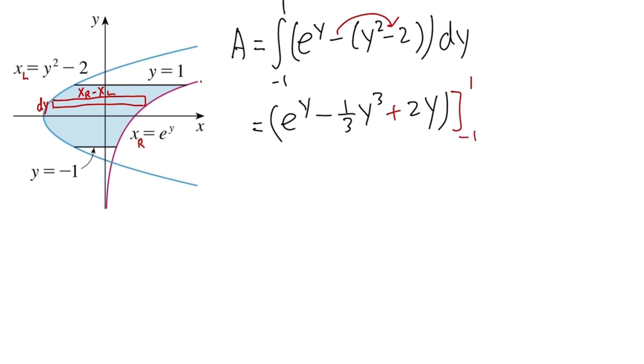So plugging 1 first, we get e to the 1st minus 1 third, 1 to the 3rd power, and then plus 2 times 1. And that's just the first part. And then minus, plugging negative 1. We have e to the negative 1, and then minus 1 third, negative 1 to the 3rd power, plus 2 times negative 1.